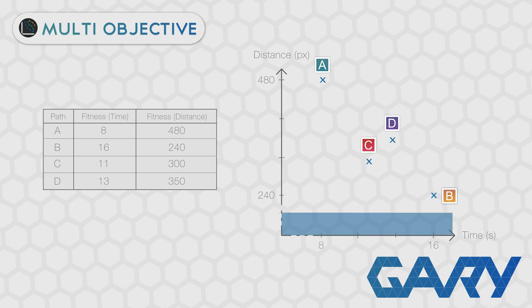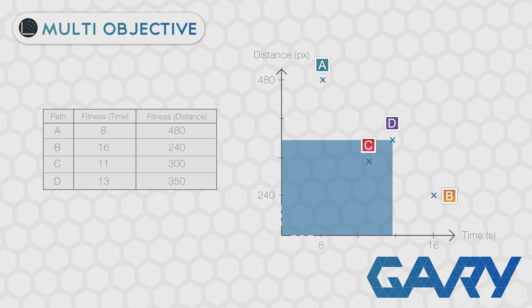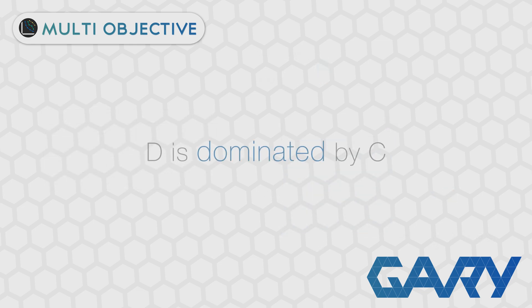C has no solutions that are better than it in both distance and time, so we've found another solution that is equally good with different trade-offs between our two objectives. But is this always going to be the case? Let's take a look at individual D. C is better than D on the distance axis and C is better than D on the time axis. This means there is no component of D that makes it better than C in any way — in other words, C is a fitter individual than D. In GAs we have a name for this: D is dominated by C.